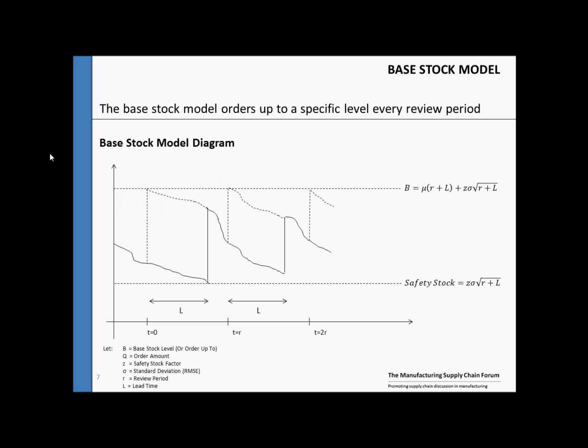Graphically, the base stock model looks like this. At each review period, we order from our current position up to the base stock level. This can be seen as the vertical dotted lines, and we see how for each review period, the magnitude of that vertical dotted line changes.